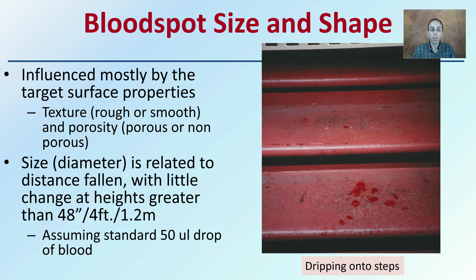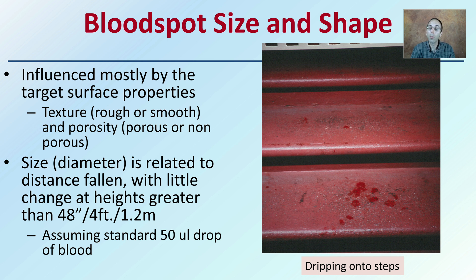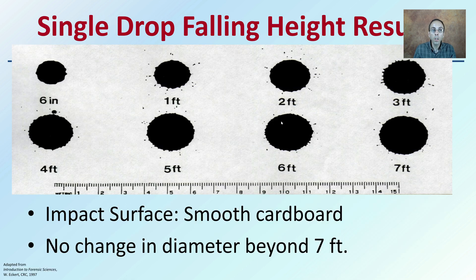Whether the surface texture is rough or smooth, and what is its porosity — is it porous or non-porous, filled with little pores, or a very solid, smooth surface like glass or metal? The size or diameter of the bloodstain is related to the distance fallen, with little change at heights greater than 48 inches — 4 feet, or about 1.2 meters — assuming a standard 50 microliter drop of blood.